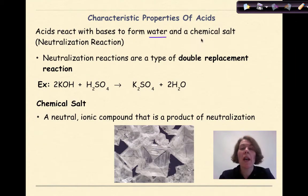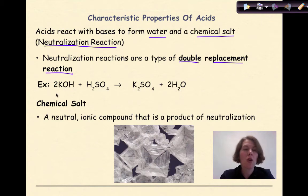Acids react with bases to form water and a chemical salt. This is known as a neutralization reaction. Neutralization reactions are a type of double replacement reactions. So I can look at this one, and this is potassium hydroxide, reacts with sulfuric acid to give me potassium sulfate, and water. So I'm looking for a base and an acid, which you'll become more familiar with, some type of ionic compound as a product, which we know any ionic compound is considered a chemical salt, and always water as a product. Now remember, a chemical salt is not just sodium chloride. We think of salt, we think of table salt, we think of sodium chloride. And of course, I put an image of sodium chloride down here, because it was just cool looking. But a chemical salt is a neutral ionic compound that is a product of neutralization.